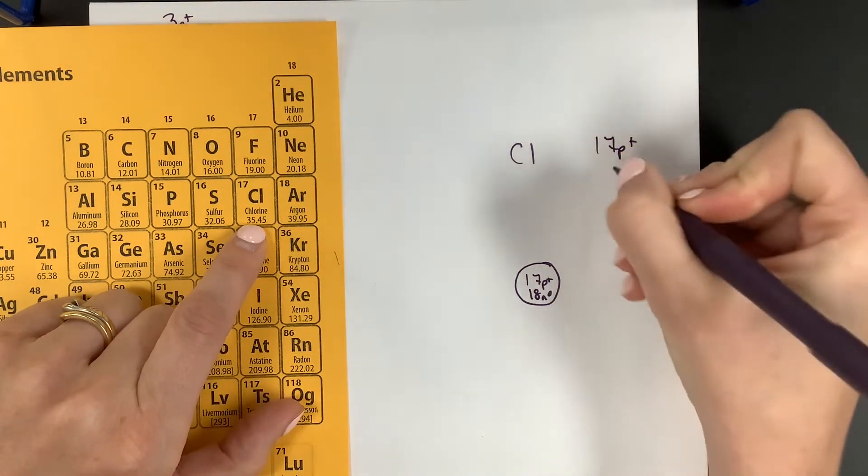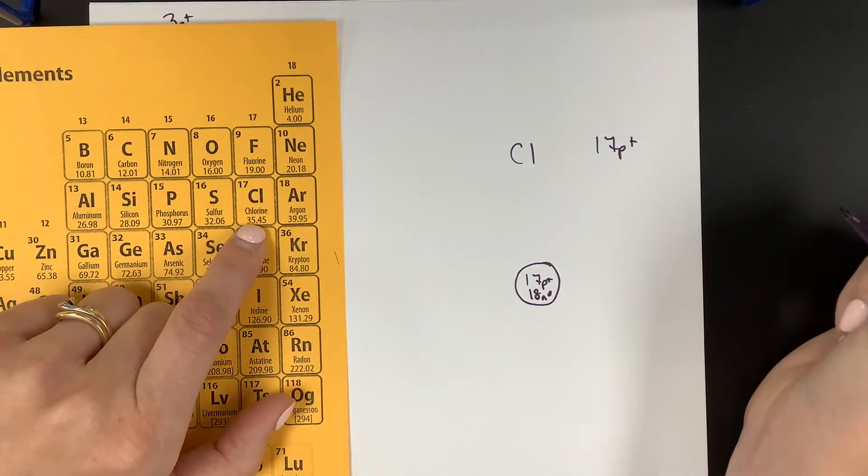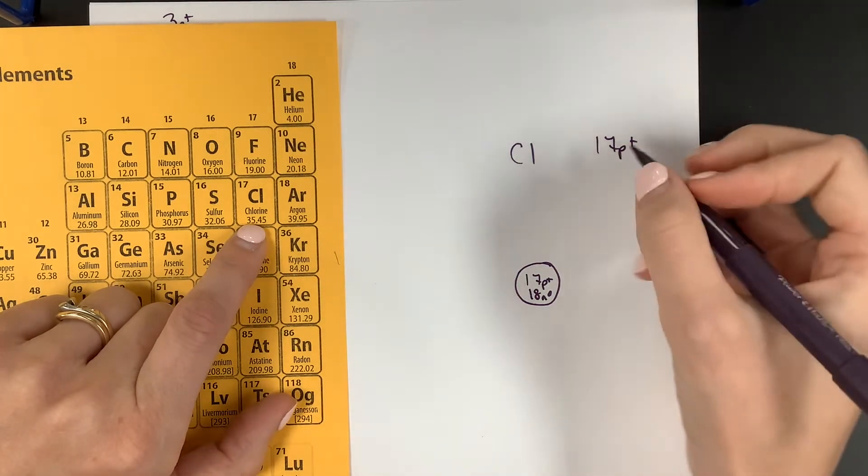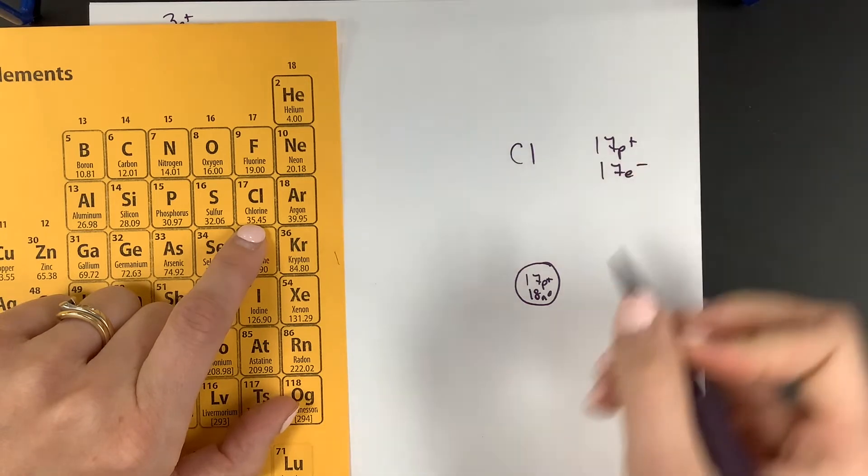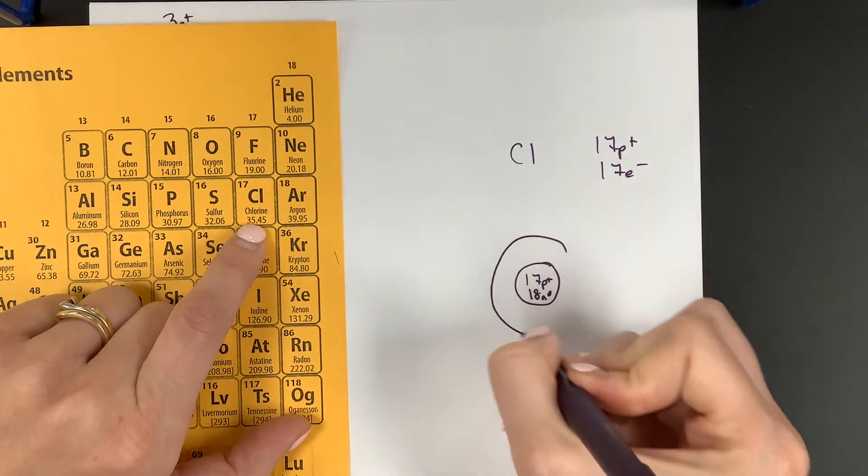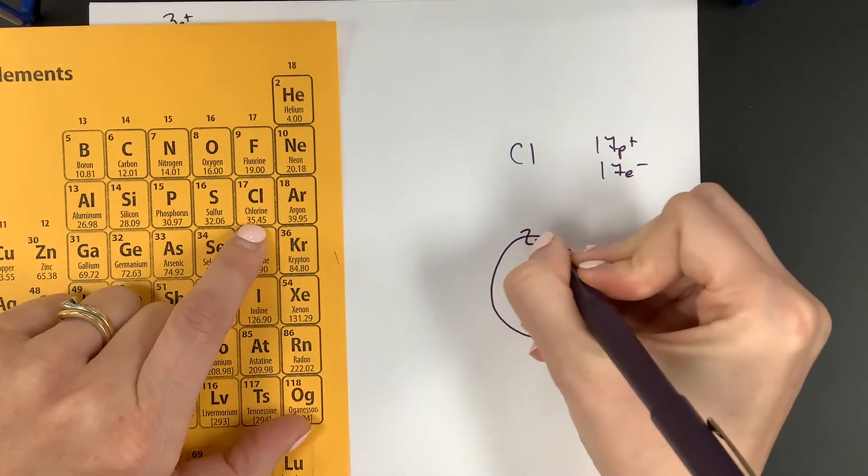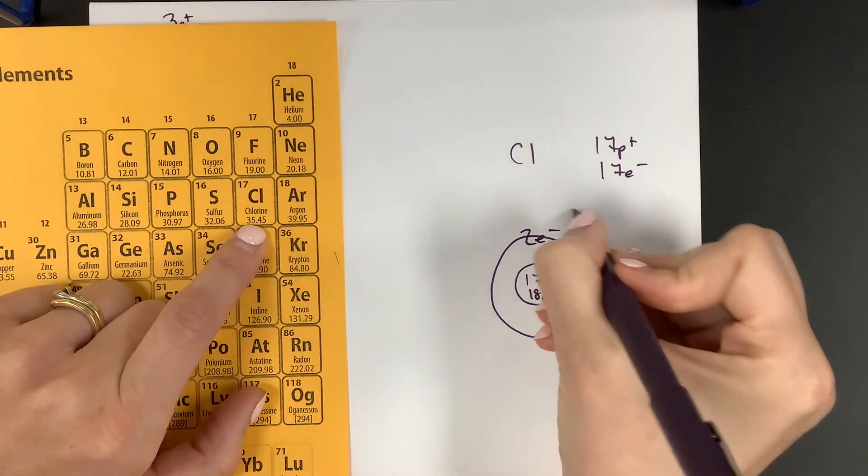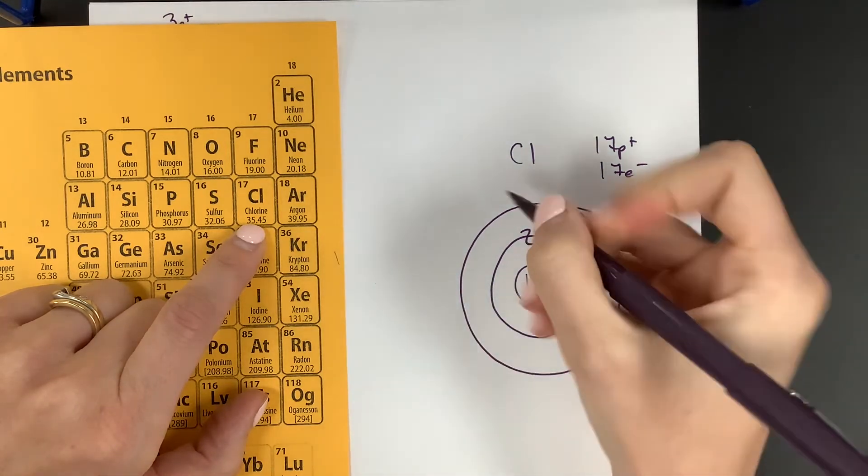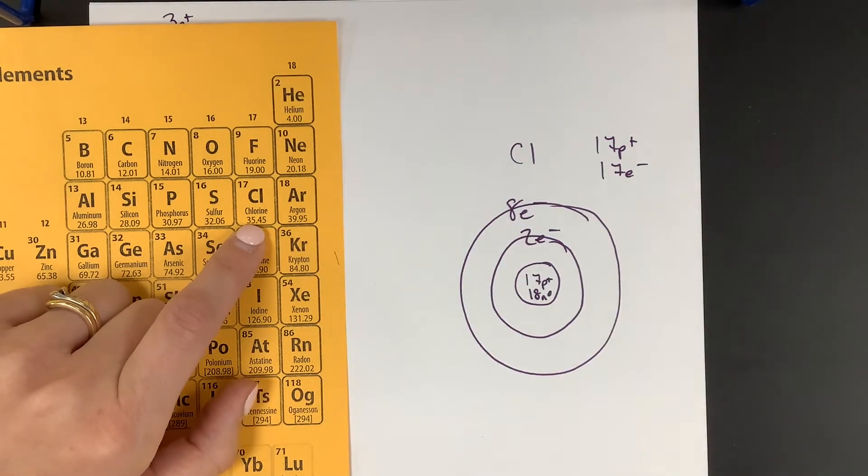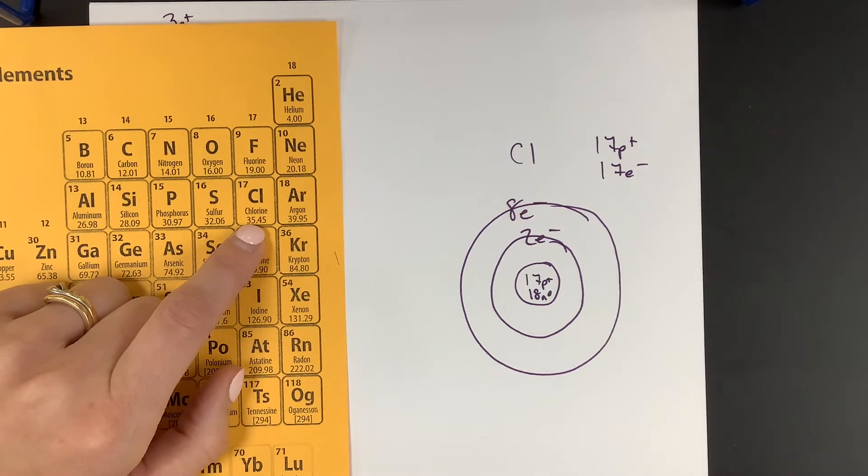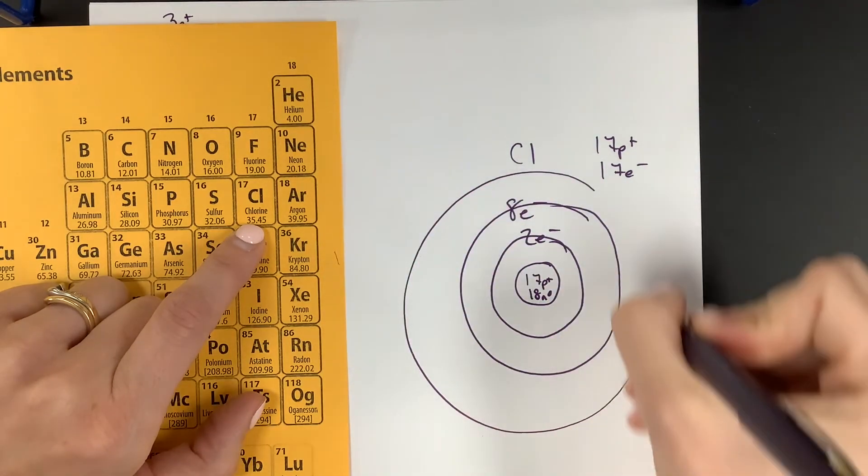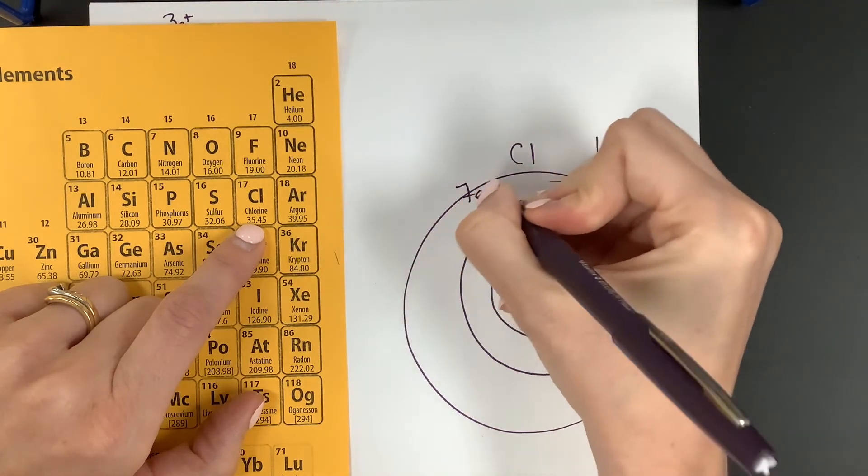All right. So we have 17 protons, 17 positive charges, and it's neutral. And it's neutral. How many negative charges? How many electrons? 17. How many go into the first shell? Two. Two. How many go into the next shell? Eight. These are very un-round circles. And so we've got two and eight so far. So we've got 10 that are placed. How many do we have left to place? We've got seven left. And so we're going to put those last seven into that last shell. Seven electrons.